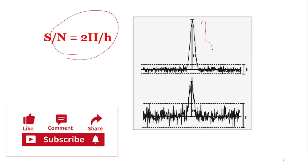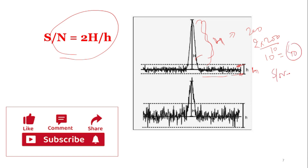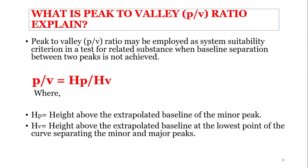Looking at the diagram, S/N = 2H / h. H is the height of the peak, and h is the baseline difference between the maximum noise and minimum noise. H will always be a greater value. For example, if H = 200 and h = 10, then S/N = 2 × 200 / 10 = 40. So the signal-to-noise ratio equals 40 in this case.